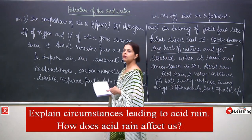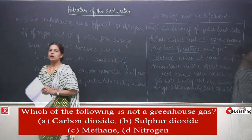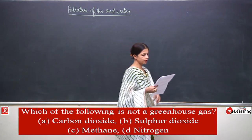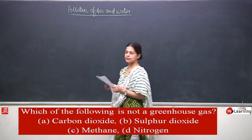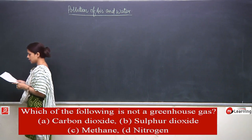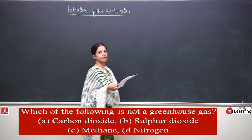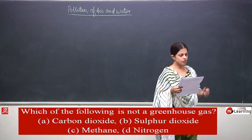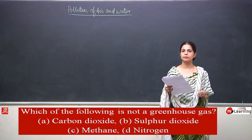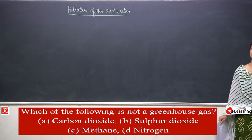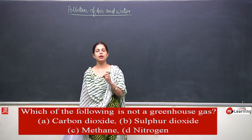This was question number 6. Now we will talk about question number 7: which of the following is not a greenhouse gas? Options are carbon dioxide, sulphur dioxide, methane, and nitrogen. We know oxides are greenhouse gases — carbon dioxide is an oxide and is a greenhouse gas, sulphur dioxide and methane too.